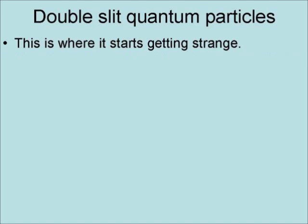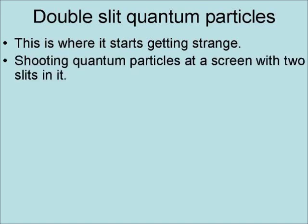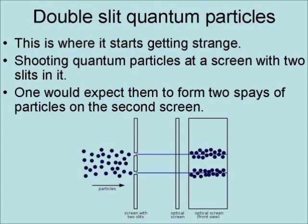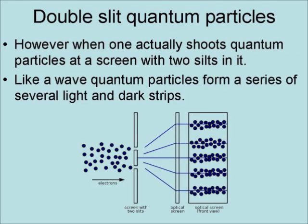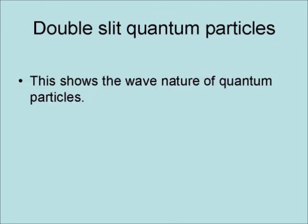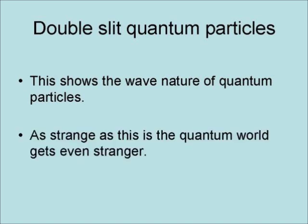Now this is where it starts getting strange. Shooting quantum particles at a screen with two slits in it, one would expect them to form two sprays of particles on the second screen. However, when one actually shoots quantum particles at a screen with two slits, like a wave, quantum particles form a series of several light and dark strips. This shows the wave nature of quantum particles.